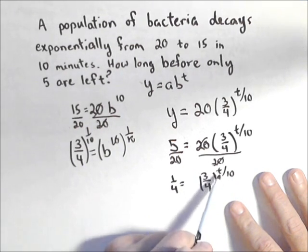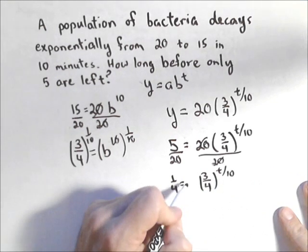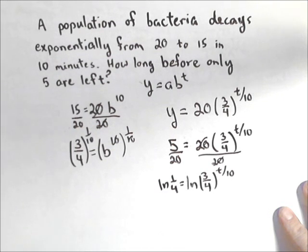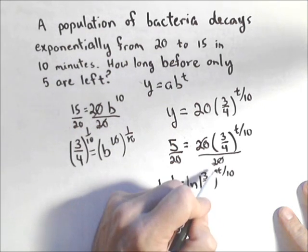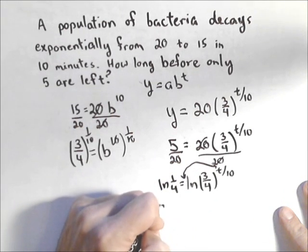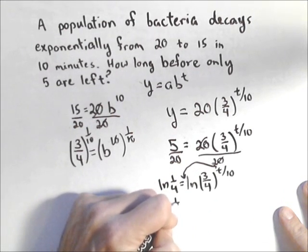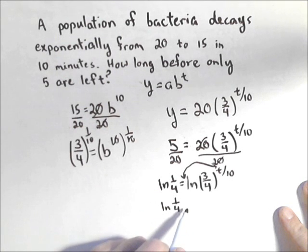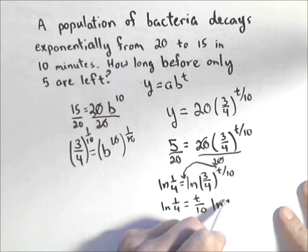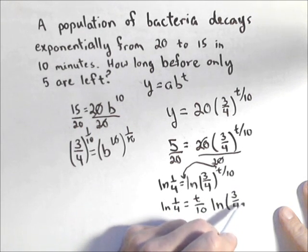Now, here's where the variable's in the exponent, this is where I'm gonna employ logs. I'm gonna use natural log. I'm gonna take the natural log of both sides. The reason I do that is it allows me to pull the exponent on this side out front. So I have ln of 1 fourth equals T over 10, ln of 3 fourths.